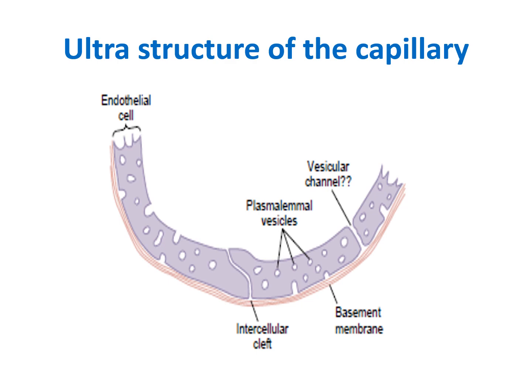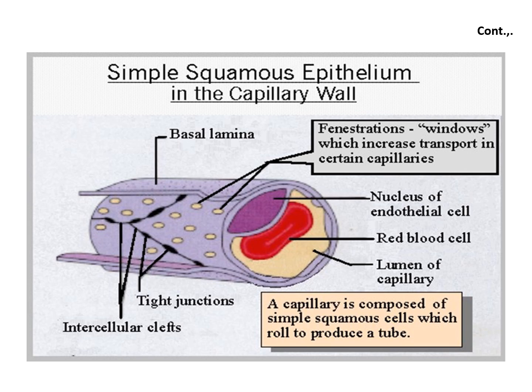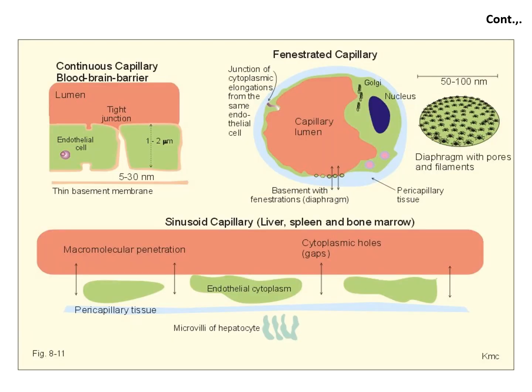Fenestrated capillaries have clefts and channels, and you can find them in the small intestine. Discontinuous capillaries have clefts and large channels, and you can find them in the liver. This is just to go through the microstructure of the capillary, and to give examples of the different types of capillaries according to their structure and their site of presence in the body.